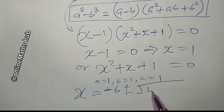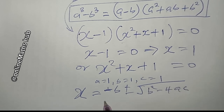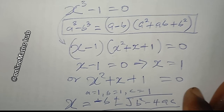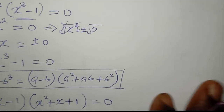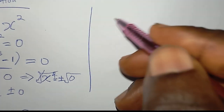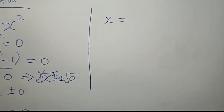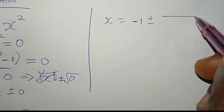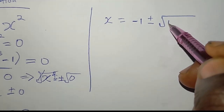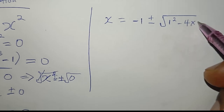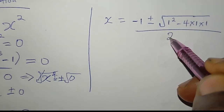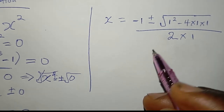Substituting the values: x equals minus 1 plus or minus the square root of 1 squared minus 4 times 1 times 1, divided by 2 times 1. This gives minus 1 plus or minus the square root of 1 minus 4, divided by 2.